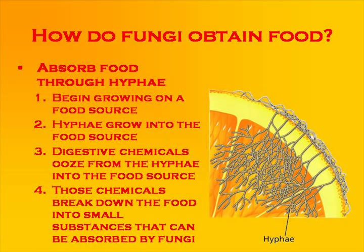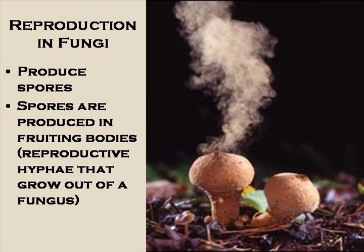As fungi decompose, they break down and remove organic material, and eventually that food item will completely disappear. Fungi usually reproduce by producing lightweight spores surrounded by a protective covering. Those spores travel easily through air and water to new sites. An individual fungus produces thousands and thousands of spores — many more than will actually grow into new fungi. Only a few will land in the right conditions and become new fungi, which is why they produce so many.